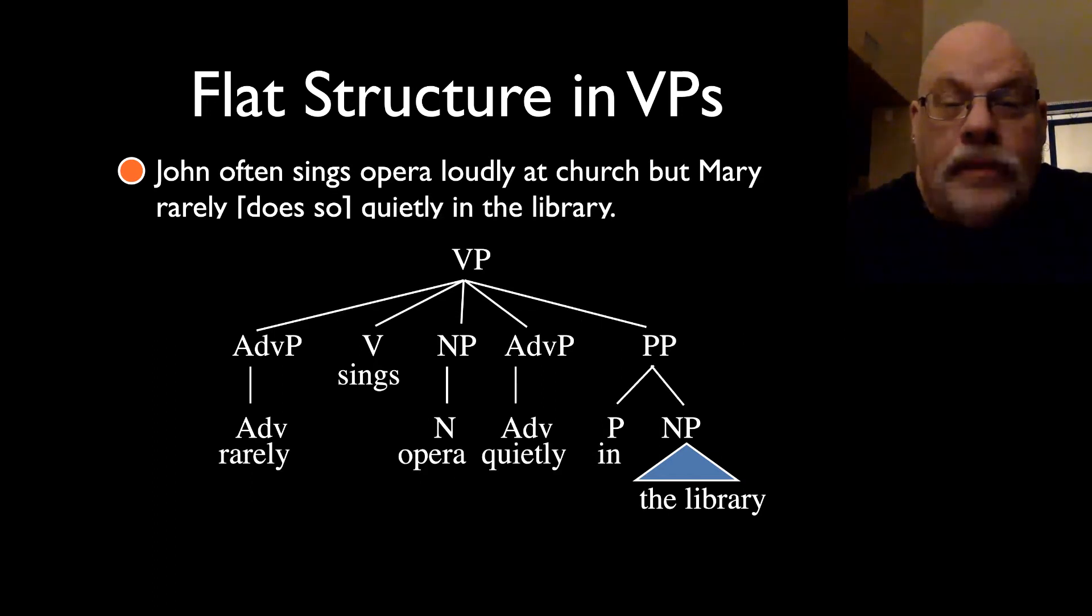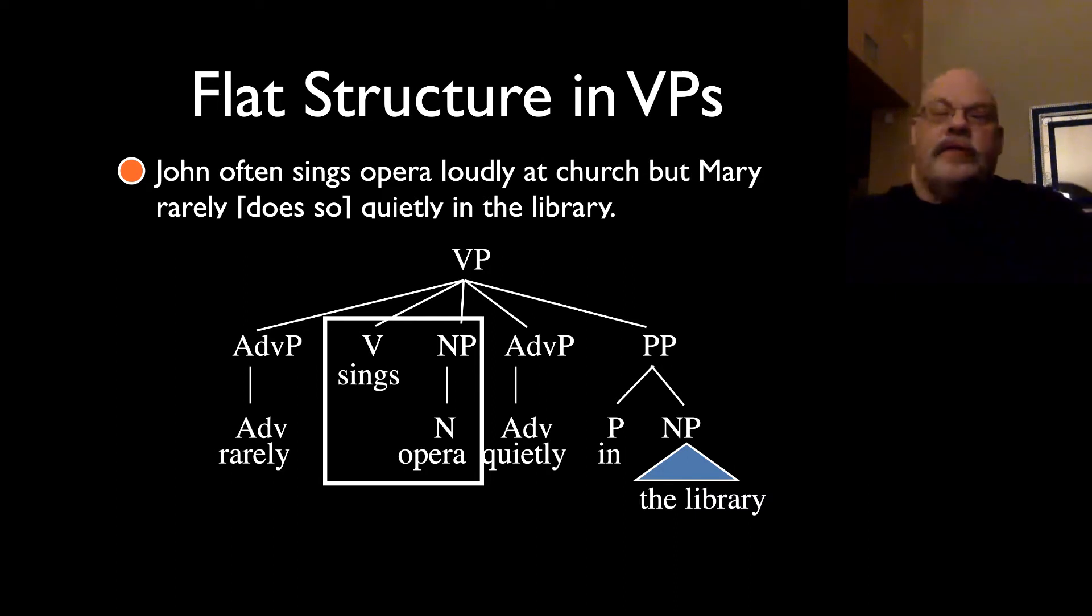John often sings opera loudly at church, but Mary rarely does so quietly in the library. Here you're targeting sings and opera. Again, not a constituent in our tree structure. So does-so-too replacement or does-too replacement seems to target elements that are not, in fact, constituents. But we know that replacement operations are evidence for constituency. So clearly we have to revise our VP rule.